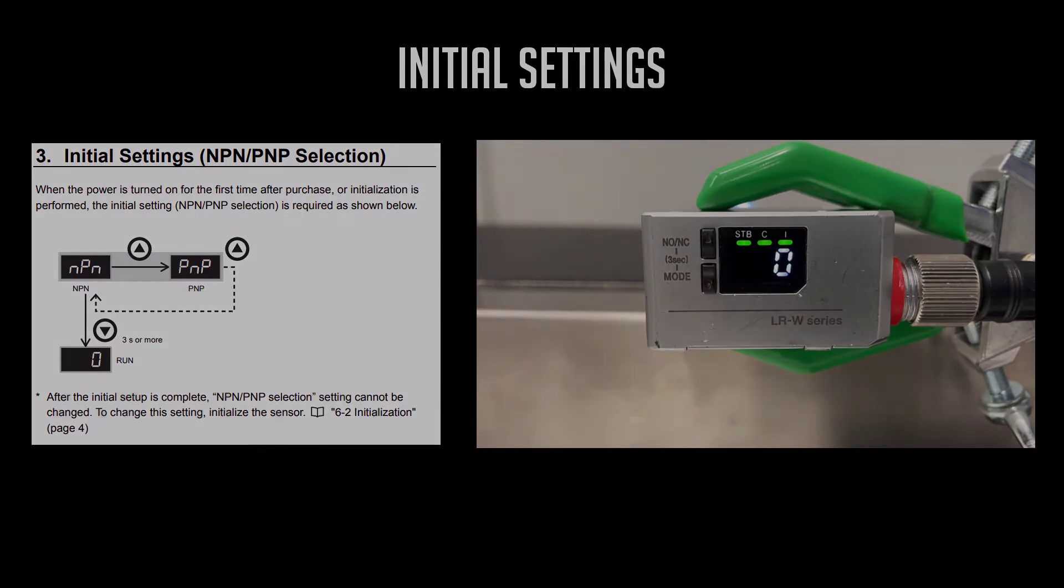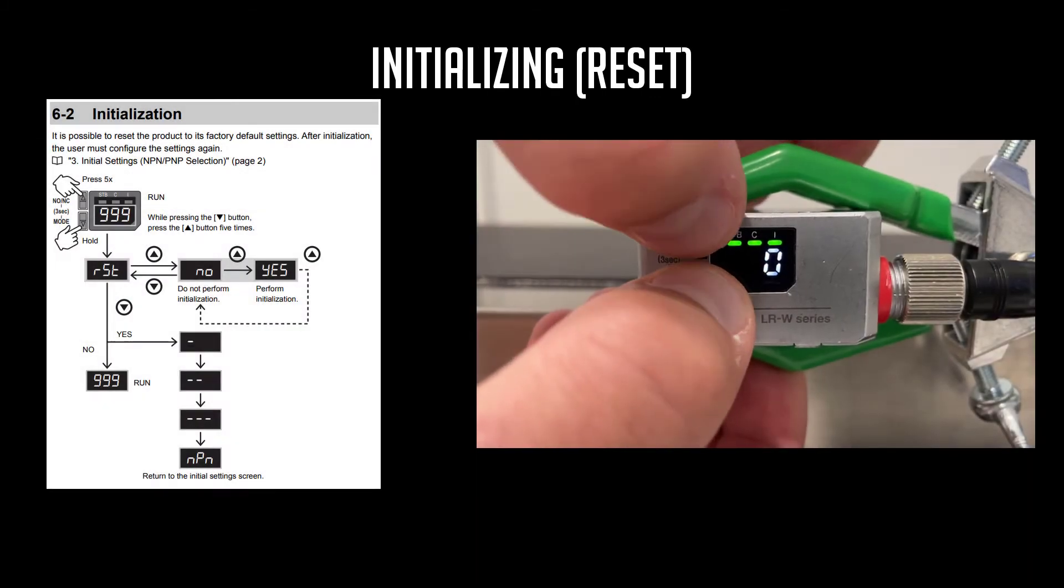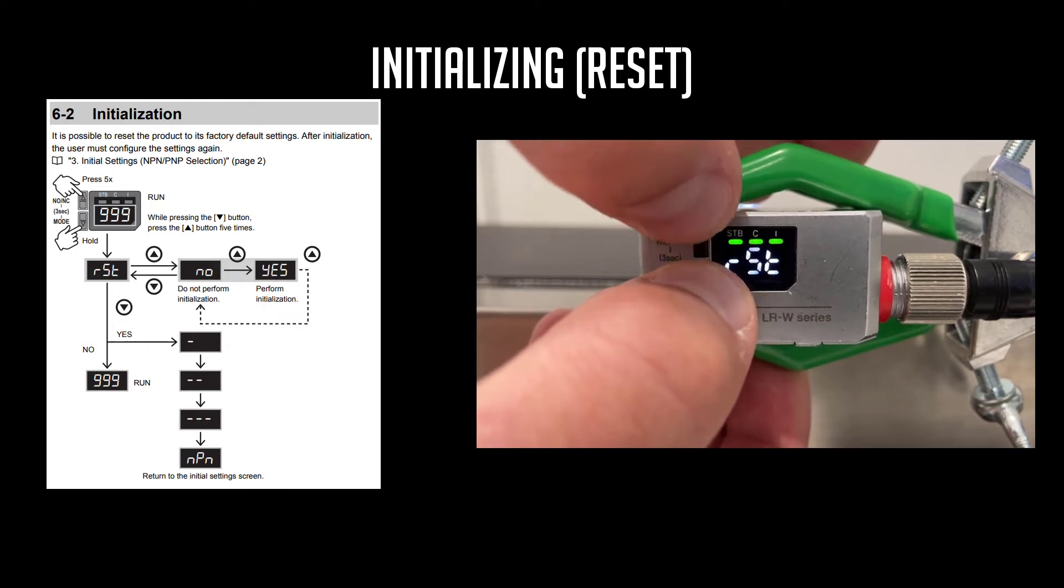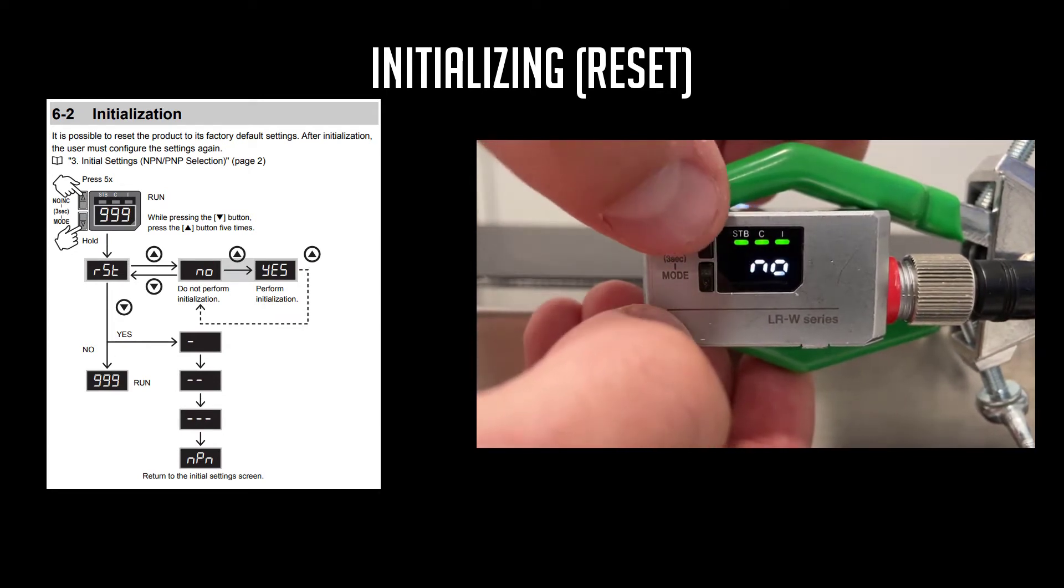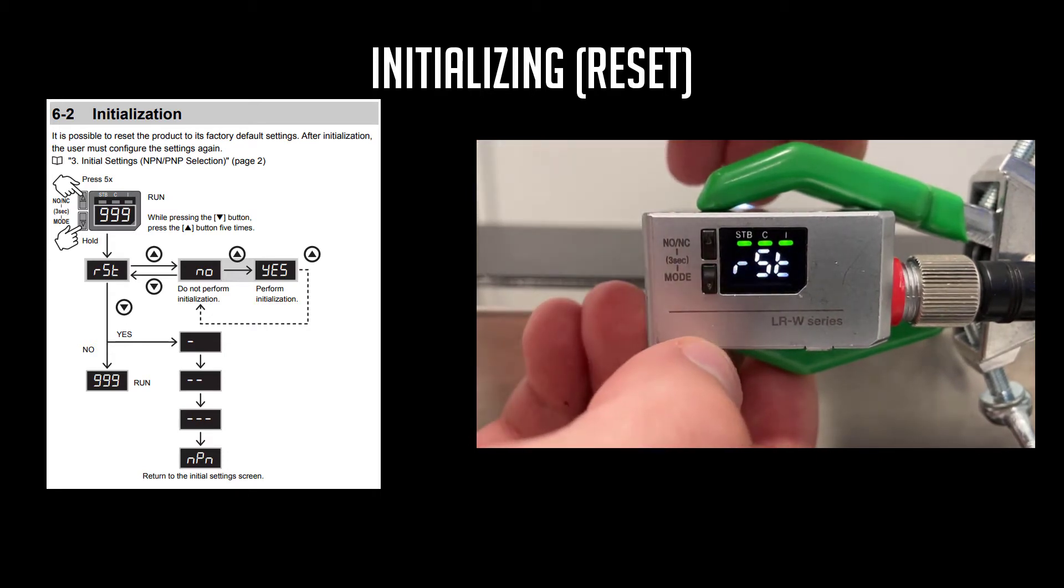If you need to change your output signal, you'll need to reset the sensor. Hold the down button and tap the up button five times until RST is displayed. Tap the up button until yes is displayed on the sensor. Now tap the down button twice to reset your LRW.